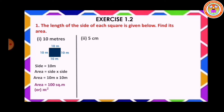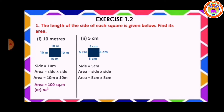Second sum: 5 centimeter. Draw one square, each side 5 centimeter. Side is equal to 5 centimeter. Area of the square is equal to side into side, so area is equal to 5 centimeter into 5 centimeter. The answer is area is equal to 25 square centimeter.